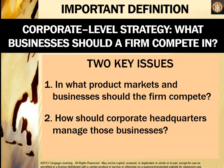As it relates to corporate level strategy, there are two key issues. First, in what product markets and businesses should the firm compete? Second, how should corporate headquarters manage these businesses? When we talk about diversification, these are the two issues we need to look at — what businesses should the firm compete in and what scope corporate headquarters has to manage them.